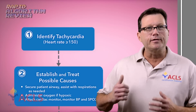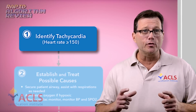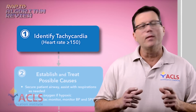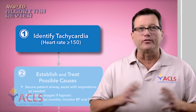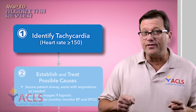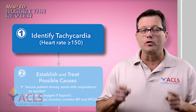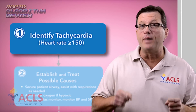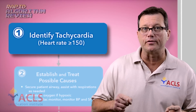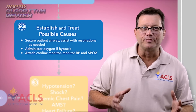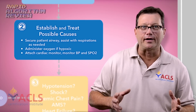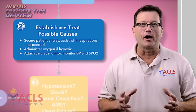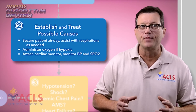Now looking at the tachycardia rhythm, the first thing we're looking for is the heart rate. Remember, tachycardia is any rate over 100, but in the ACLS algorithm, we're looking for heart rates and pulses above 150. Next, why is this patient tachycardic? Try to find a cause for this tachycardia and begin supportive care.